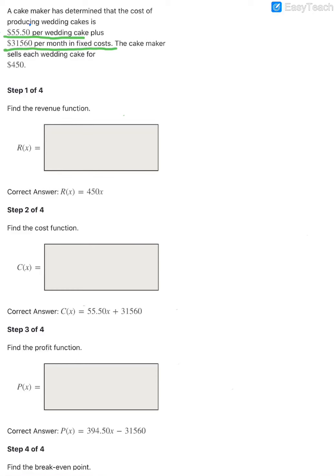Those fixed costs are going to be things like rent or insurance, things that are not going to change each month no matter how many cakes she produces. The cake maker sells each cake for $450 each.